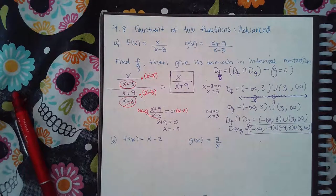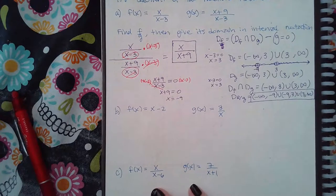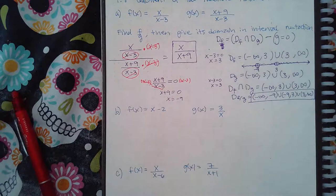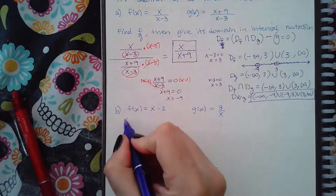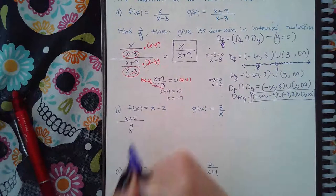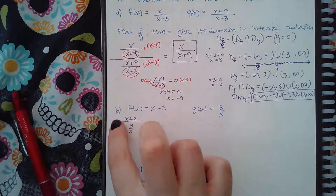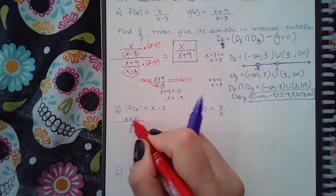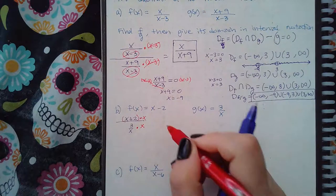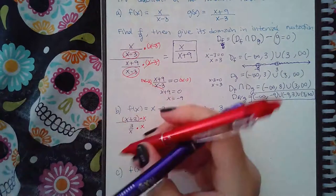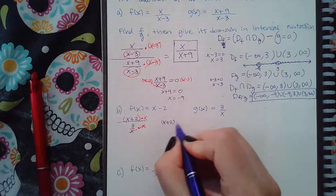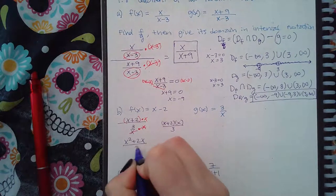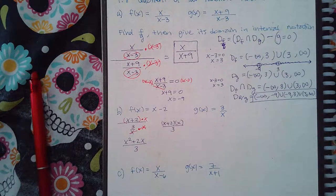Now let's look at a second example where one function has a denominator and the other doesn't. Finding f over g creates a complex fraction because there's a fraction within a bigger fraction. I'll multiply both numerator and denominator by the common denominator. The x cancels, and I get (x+2)·x over 3, which is (x²+2x)/3. That is as simplified as I can get.